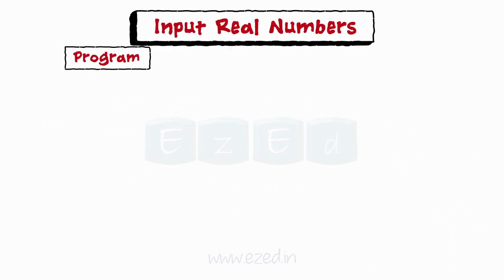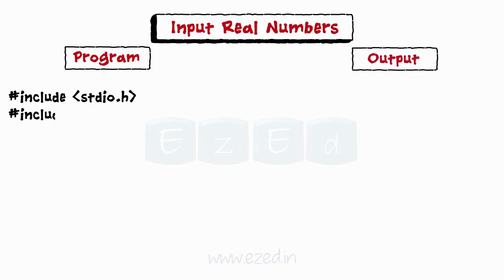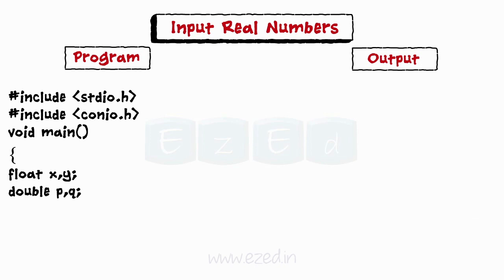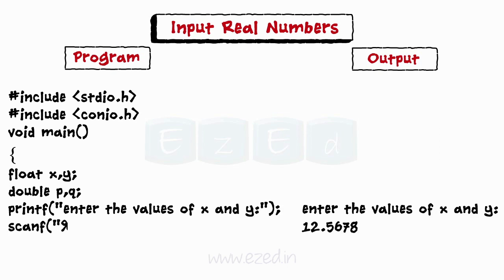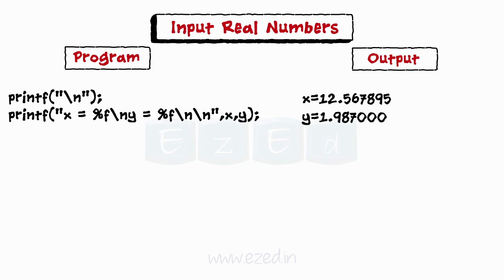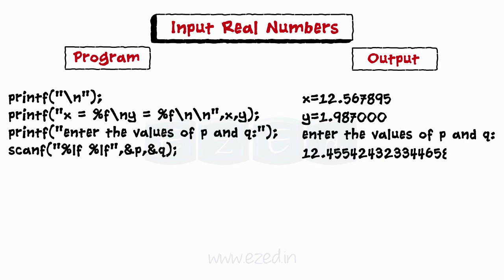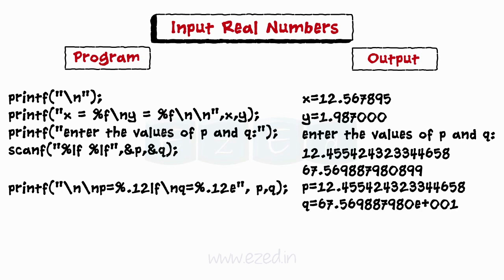Let's write a program to show input of real numbers, and simultaneously look at the output. We start by declaring the header file and then the main function, then we declare the variables. After which we ask the user to enter the values of X and Y and store them using scanf statements, then print the values on the screen. Again we ask the user to enter the values of P and Q and store them in long double variables, then print their values. We end the program using the getch function.